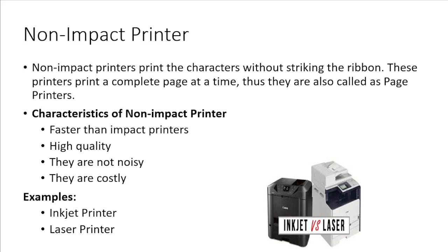Next is non-impact printer. A non-impact printer produces output on paper without striking the paper. Non-impact printers use electrostatic, inkjet, laser and thermal technologies for printing. They are faster and produce higher quality output than impact printers, and they produce no noise during printing. However, these printers are more costly than impact printers. Examples of non-impact printers are inkjet printer, photo printer and laser printers.